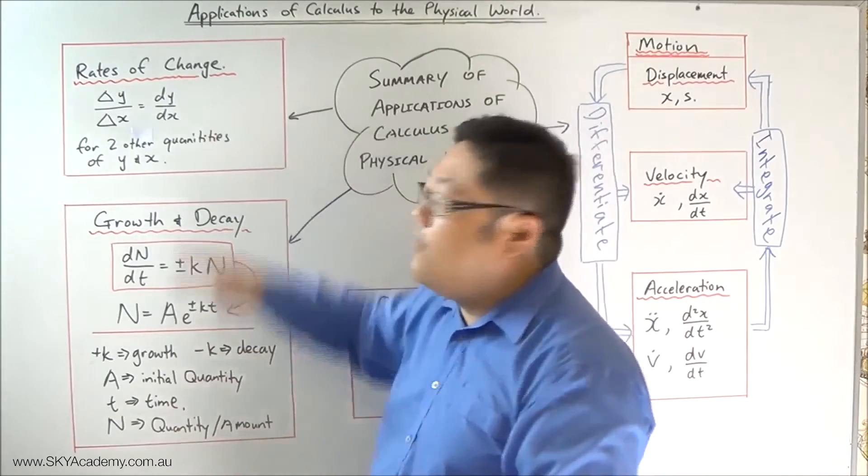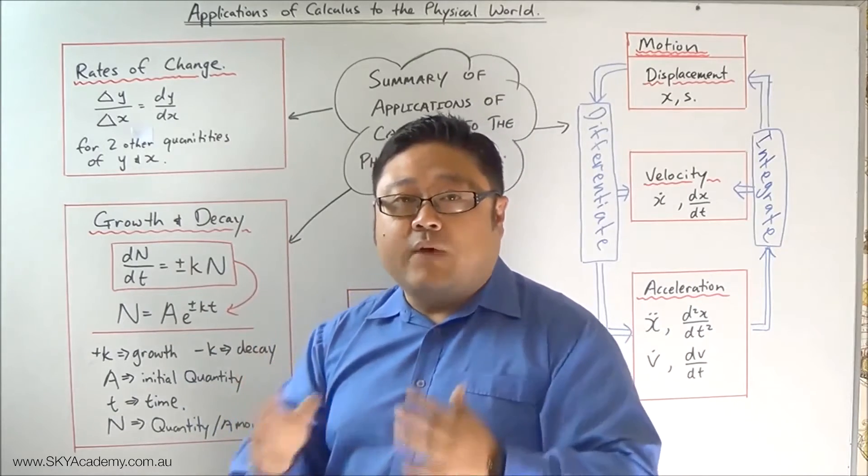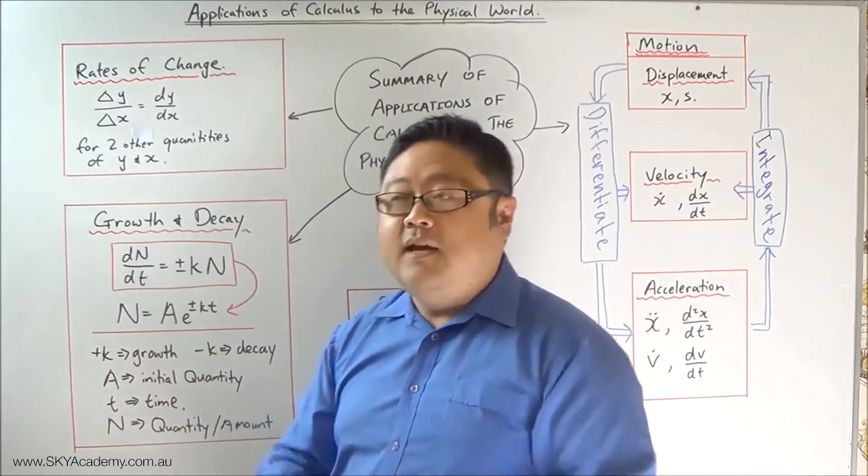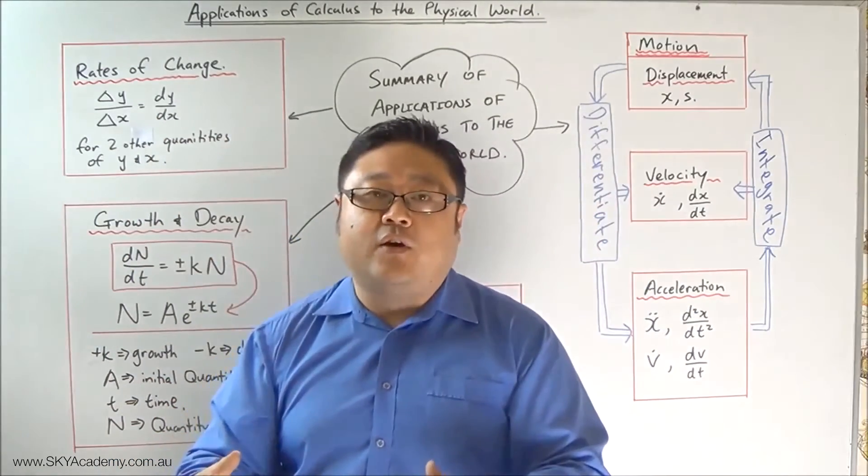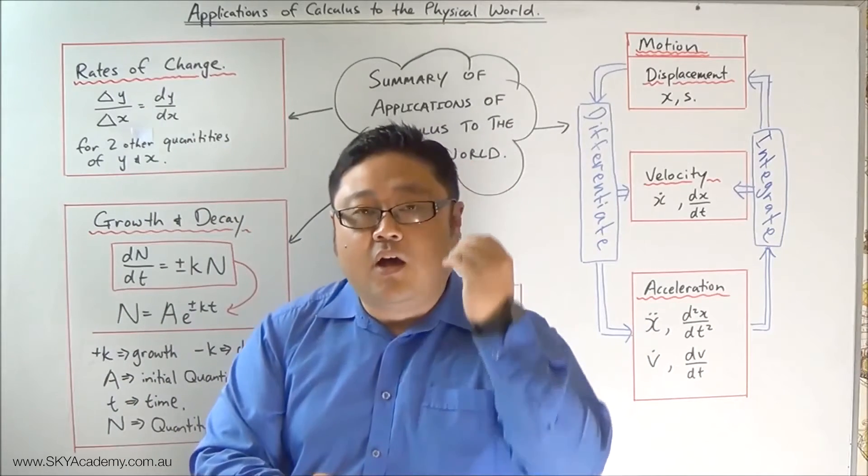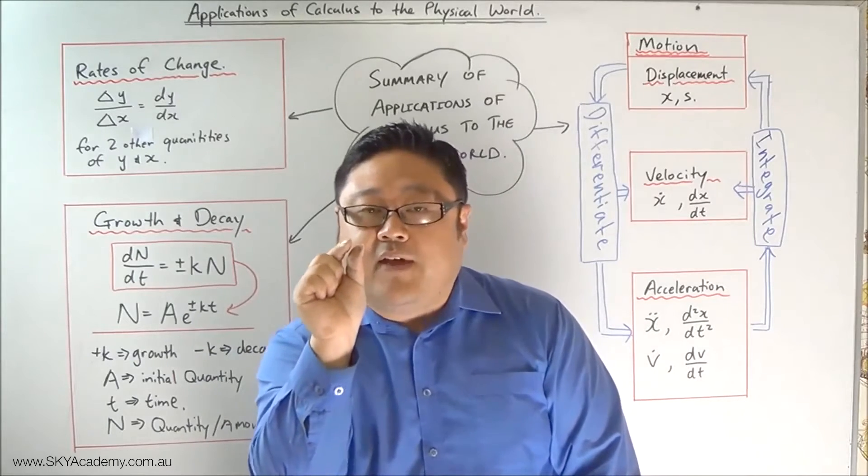So we started off with rates of change and we looked at what a rate of change actually was. The rate of change in a number plane is really just the gradient of the tangent of the curve. It tells us the change in y over the change in x for a really minute increment of x and y.